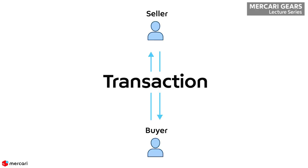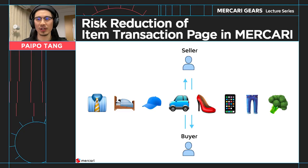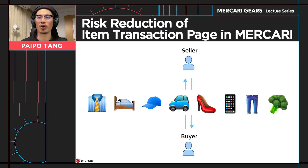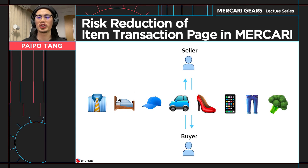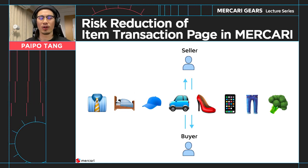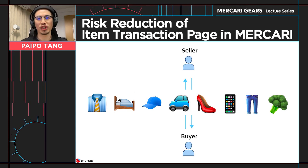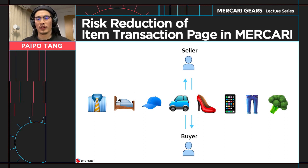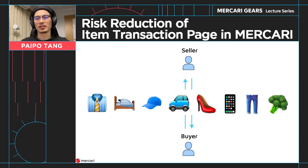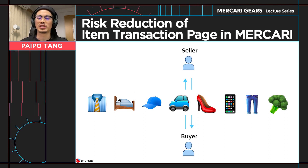In order to get to the item transaction page, the seller has to list an item with the Medi-Kali app, and the buyer will buy the item from the seller. That's when the journey of an item transaction page starts. In Medi-Kali, you can sell all kinds of stuff — from clothes, shoes, smartphones, to big furniture or even cars. For different item types, it might involve slightly different transaction flows.